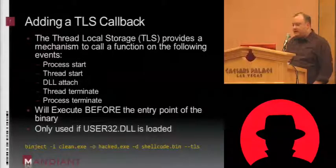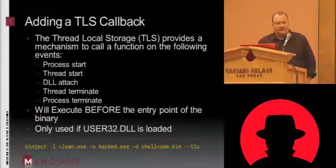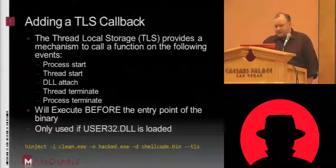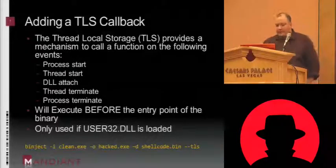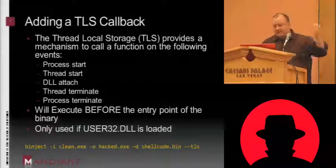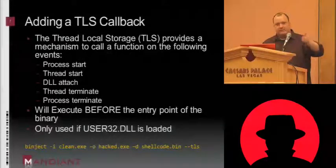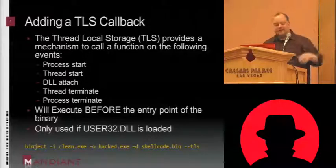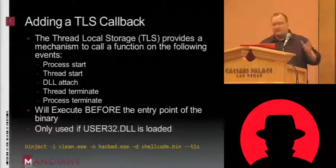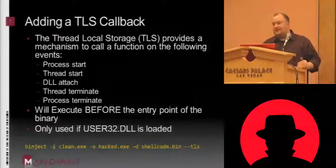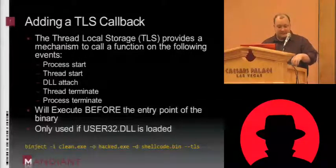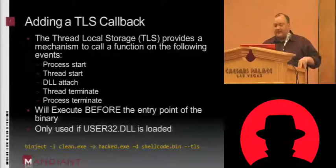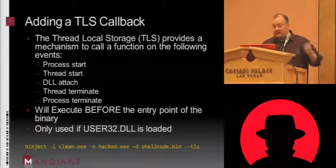Another feature is the automated installation of TLS callbacks. Some of you might be familiar with this — it's one of those somewhat malicious techniques used out there, though not all that common. It's initially part of the whole thread local storage system. You can have threads with their own unique pieces of memory and callback functions that initialize them. But from an attacker perspective, TLS callbacks execute before the entry point of a binary. So if you attach malicious code to a TLS callback, you have full access to do anything to that process before anything in the binary runs.